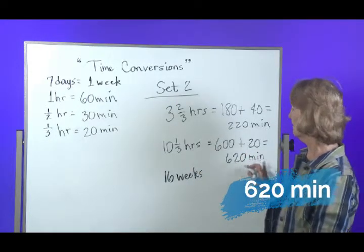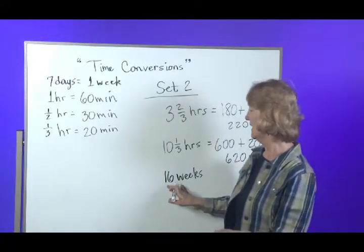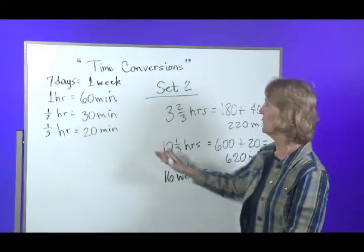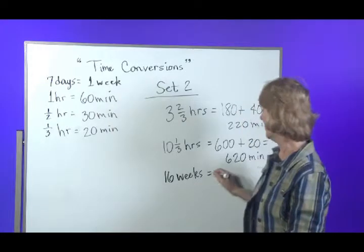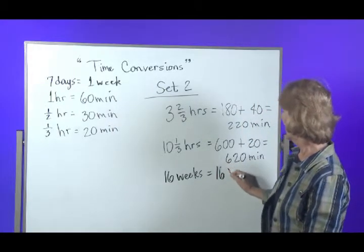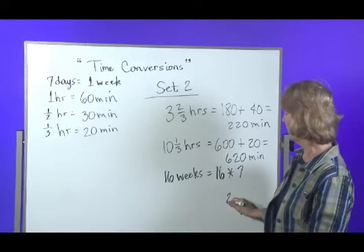You can always convert hours to minutes or minutes back to hours. 16 weeks would be 16 times seven. Seven times six is 42.